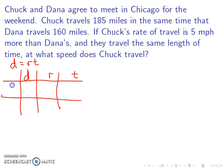So, I have Chuck and Dana. So Chuck travels 185 miles. Dana travels 160. However, their time is the same. We don't know exactly what that time is, but we know it's the same. So we'll use t to represent that. We also know Chuck travels 5 miles per hour more than Dana. So if Dana is x, Chuck is x plus 5.